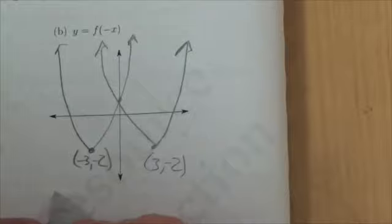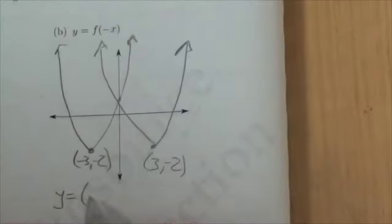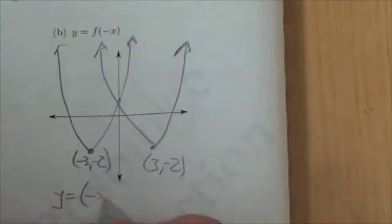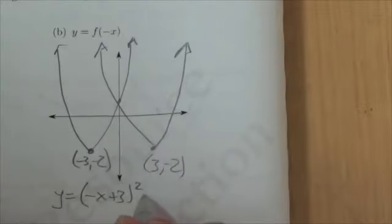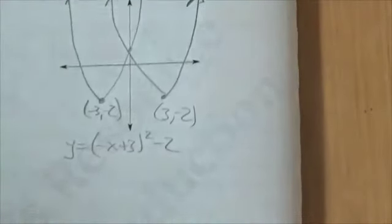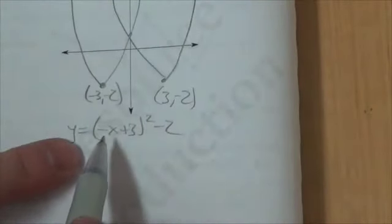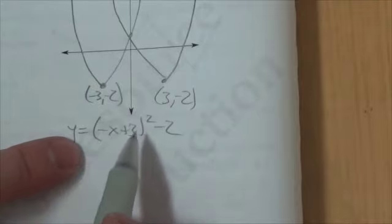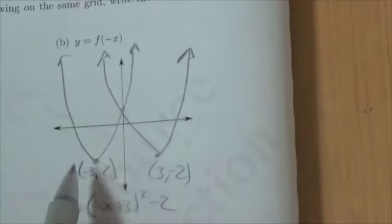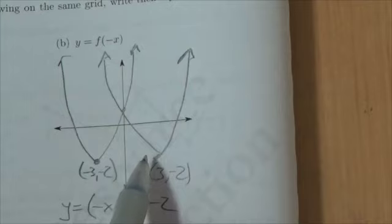If I plug negative x in, that's going to be y equals negative x plus 3 squared minus 2, but I want to be careful here. I want to make sure that I separate the reflection from the translation, because now this thing has been moved over.